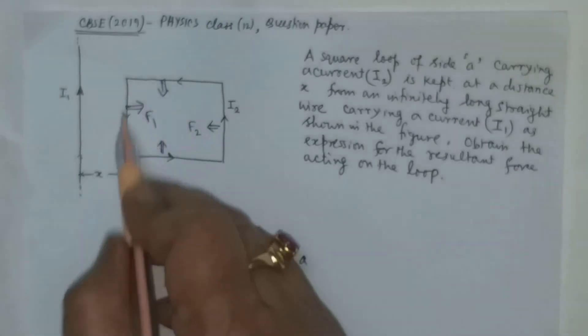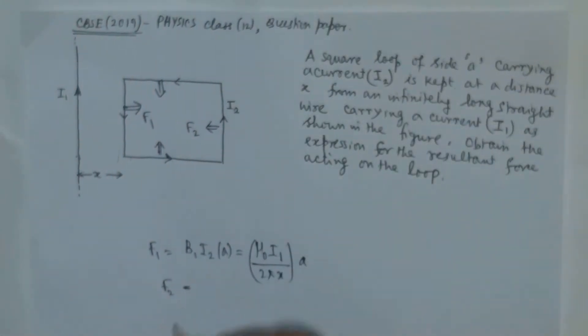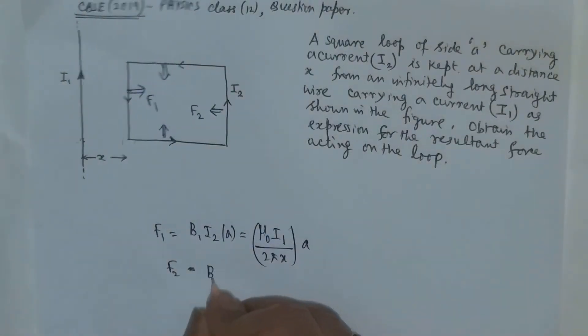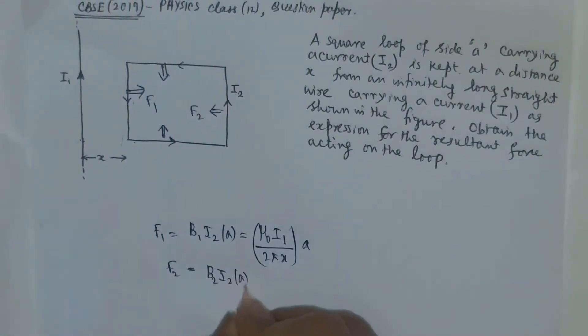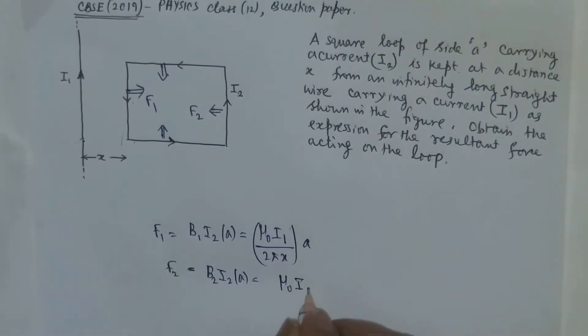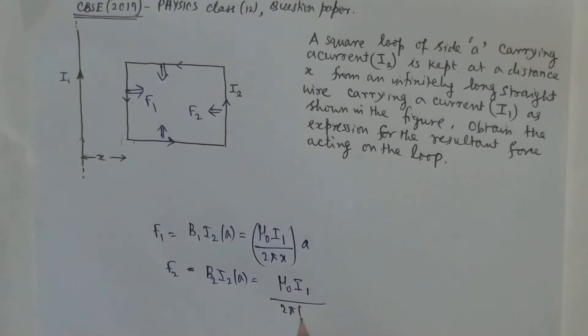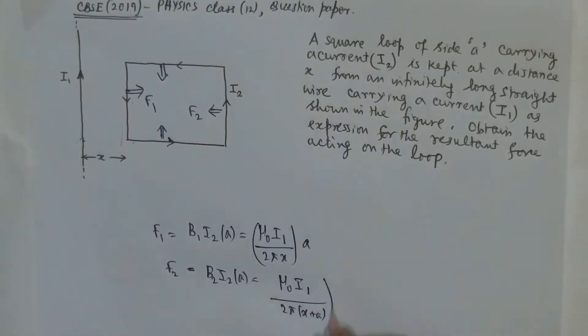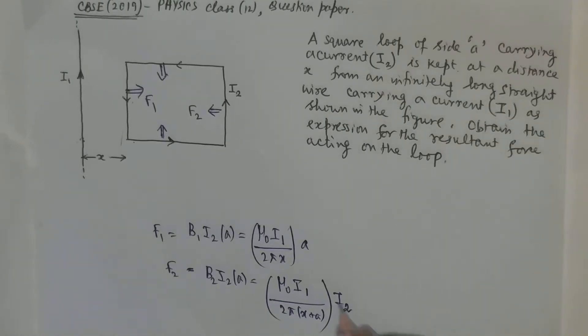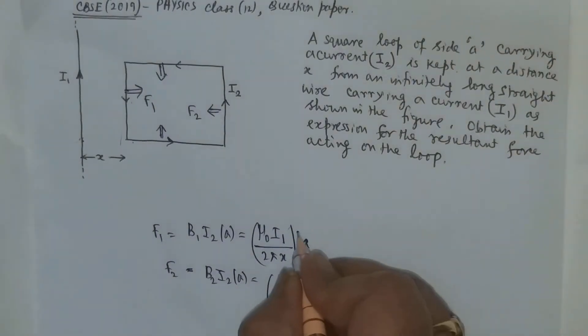Clearly F1 and F2 magnitudes won't be equal because the distances are different. So what will be F2? F2 will be equal to B2 into I2 into A. What is B2 due to this? It will be μ₀I1 divided by 2π(x plus A) into I2 into A. Here also I2 is there.